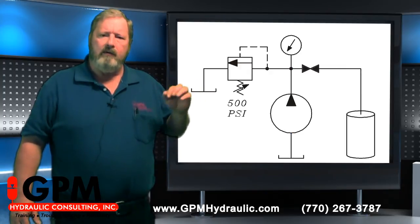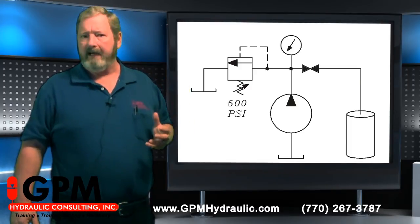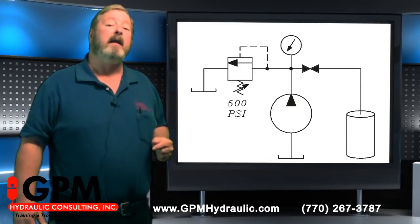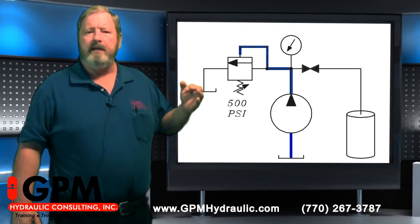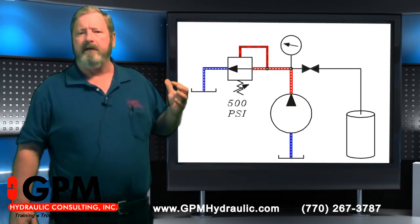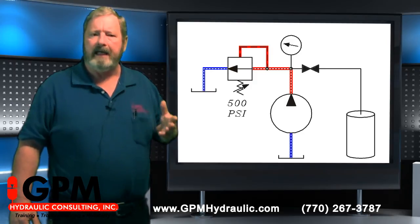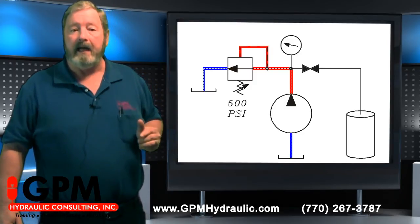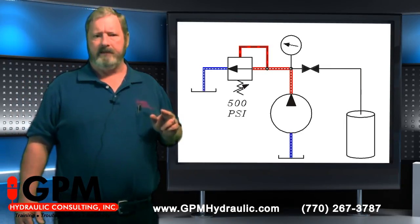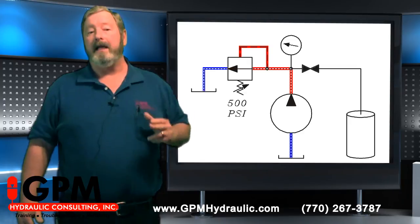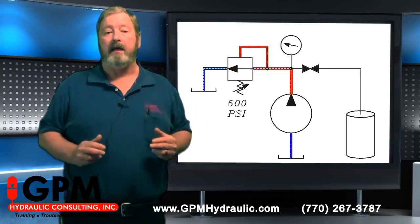Now if I close the hand valve, I've blocked off my no-resistance flow path. There is no flow path except through the relief valve. What's going to happen now? When I turn the pump on, pressure is going to build. Once it gets to 500 PSI, it will go through the relief valve and back to tank. What does my gauge read now? 500 PSI. Like I said, what you're reading on a gauge is not the pressure the pump is putting out — what you're reading on the gauge is how much resistance is currently being overcome in the hydraulic system.